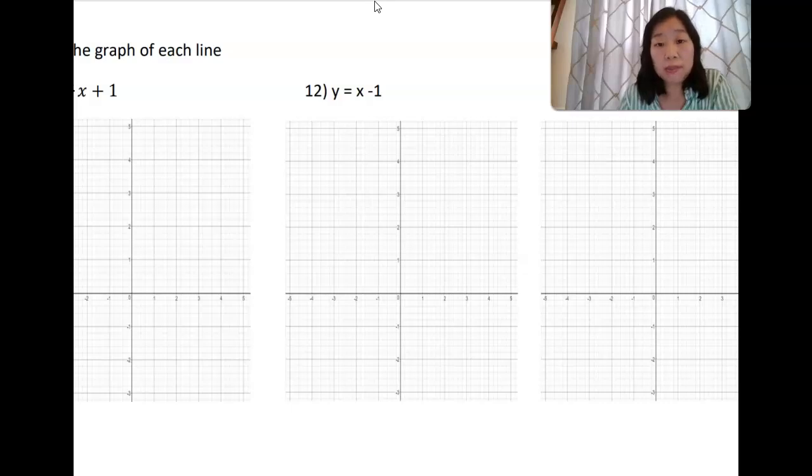x minus one. Because there's no number here we know that there is an imaginary one over one, right? So this tells me to begin at zero negative one. So here is zero negative one here.